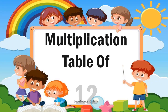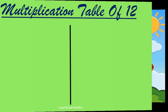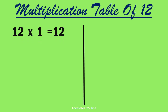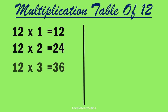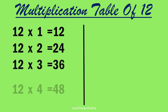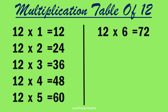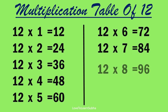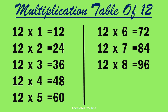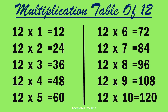Multiplication table of 12. 12 1s are 12, 12 2s are 24, 12 3s are 36, 12 4s are 48, 12 5s are 60, 12 6s are 72, 12 7s are 84, 12 8s are 96, 12 9s are 108, 12 10s are 120.